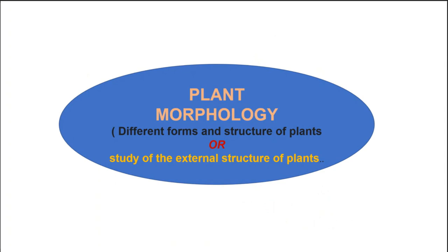First is the term morphology. As I have told you, morphology means outer look, outer appearance. So we are dealing with plant morphology, and here we will study different forms and structures of plants. Simply we can say, plant morphology means external structures of plants.